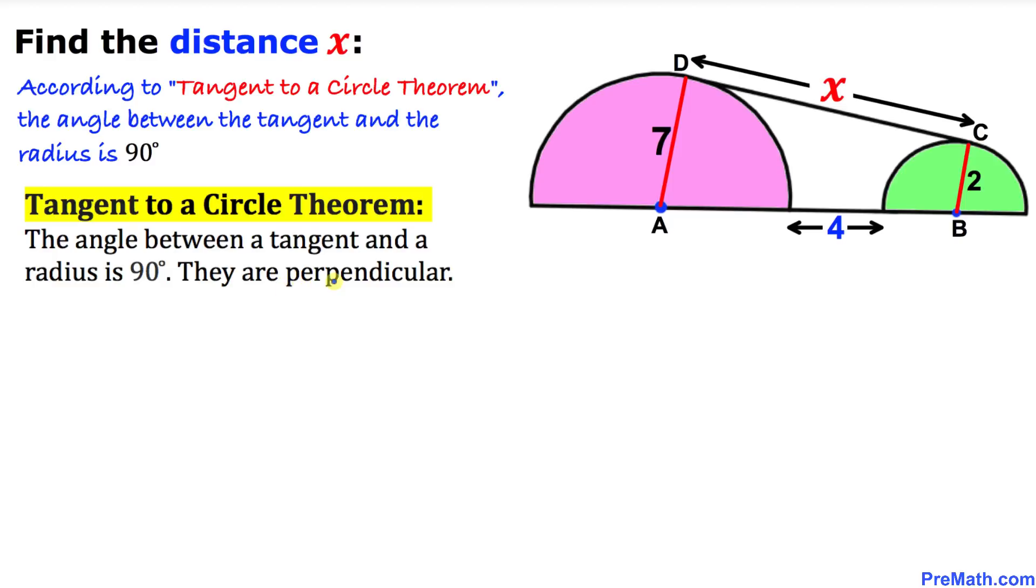That means they are perpendicular. So the angle between this tangent line and these radii is going to be 90 degrees, and this angle is going to be 90 degrees as well.